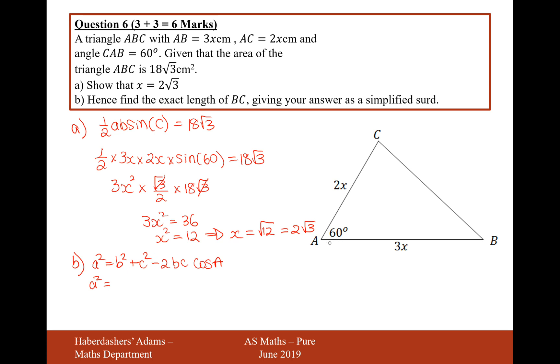Now, b squared was, well actually it doesn't really matter which way around we label it, but let's call it the a b one. So it would be 3 root 12 squared plus 2 root 12 squared minus 2 times 3 root 12 times 2 root 12 times cos 60.